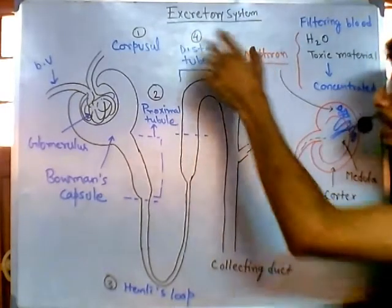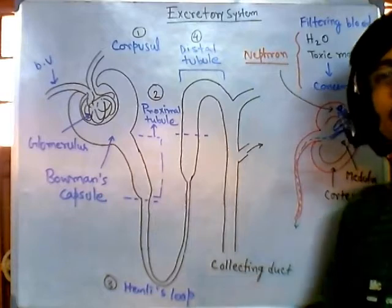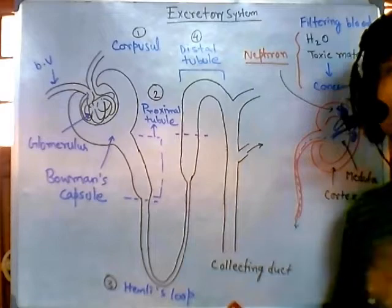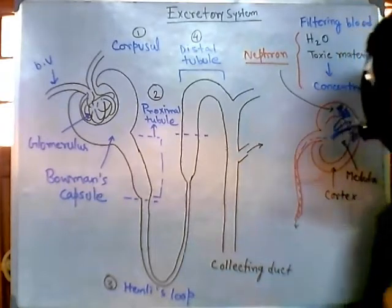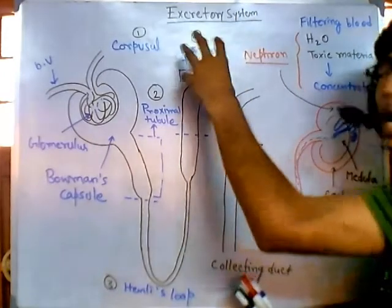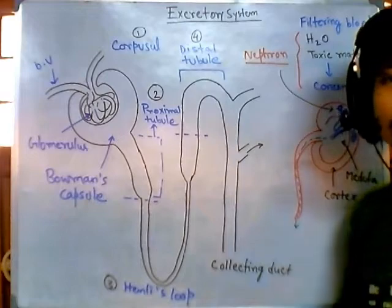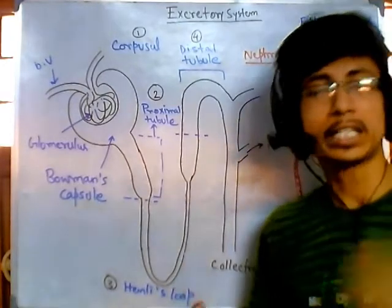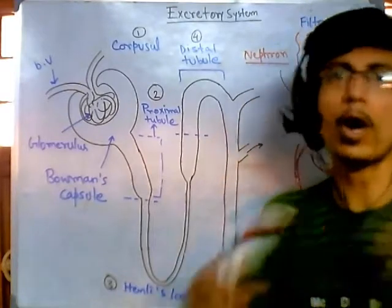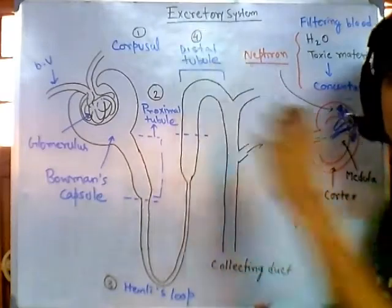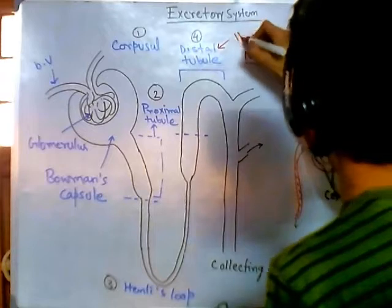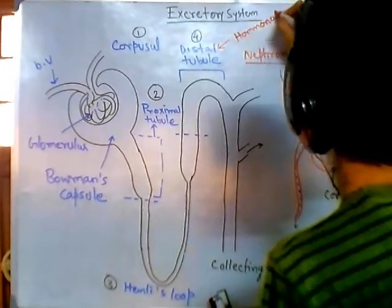Oh sorry, I missed the distal tubule. The function of distal tubule is also reabsorption of nutrients and electrolytes — reabsorption of water, reabsorption of sodium, reabsorption of chlorine. So these things are performed here: reabsorption of water, sodium, and chlorine. And this part is under hormonal control — hormonal regulation. Depends upon whether you are starved, dehydrated, or diabetic. So all of these things are performed in the distal tubule because this section is under hormonal regulation.